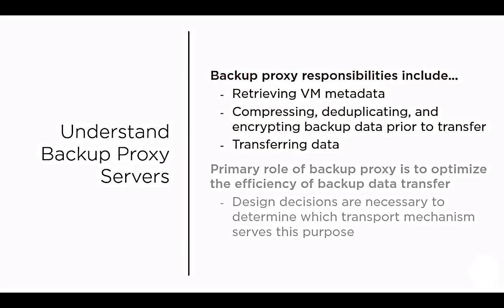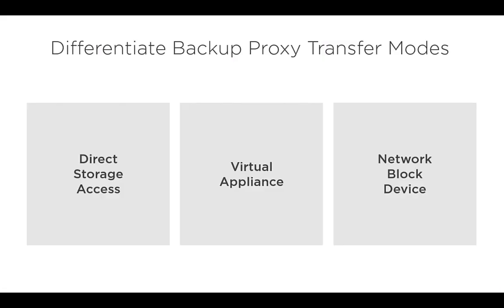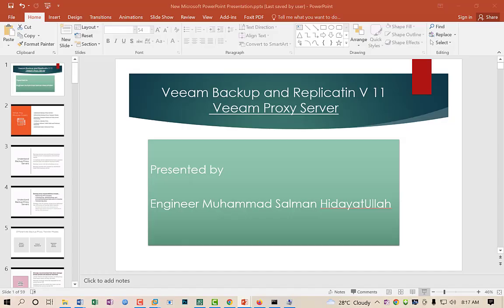Design decisions are necessary to determine which transport mechanism serves this purpose. There are three types of transfer mode. The transfer mode determines how the backup proxy server reacts. The first method is called Direct Storage Access, the second is called Virtual Appliance, and the third is called Network Block Device.